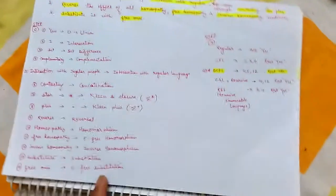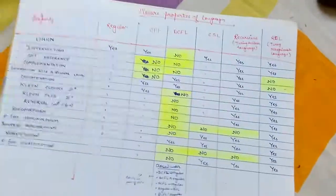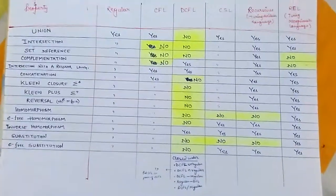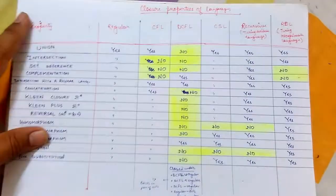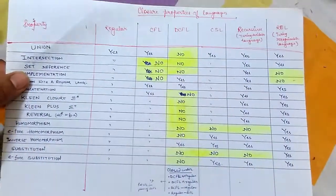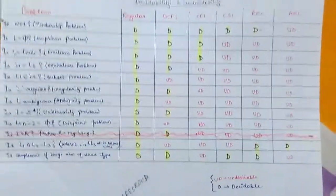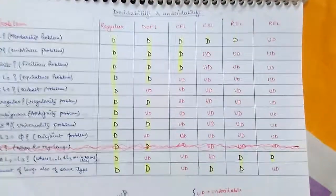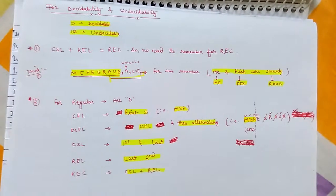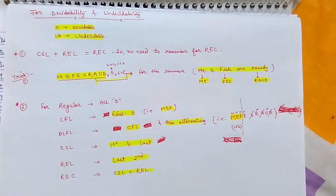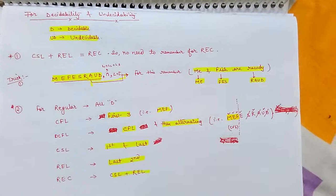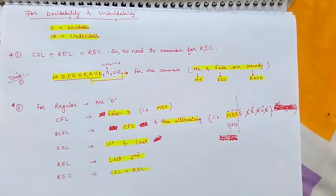So friends, with this you will be able to cover this closure property. Once again, you can just take this picture by stopping the video. And you have already covered the decidability. You can take this picture again if you want to, and this last one for decidability if you again want to see this. Decidability, that's perfect. And best of luck for your upcoming examinations and for GATE 2020. Thank you.